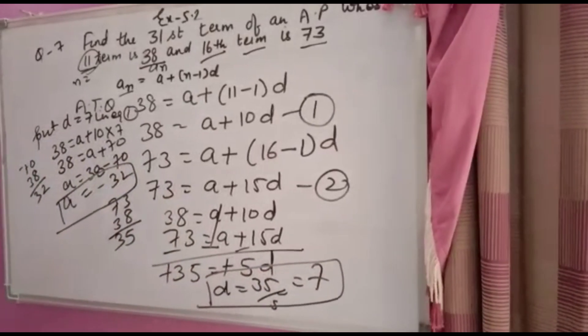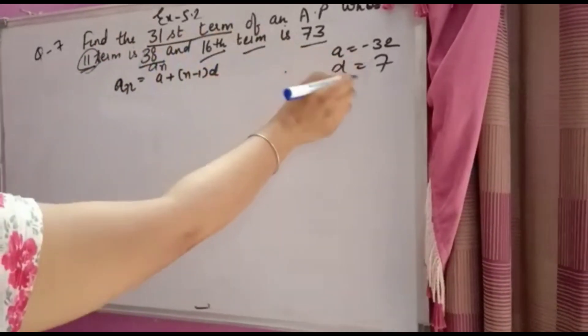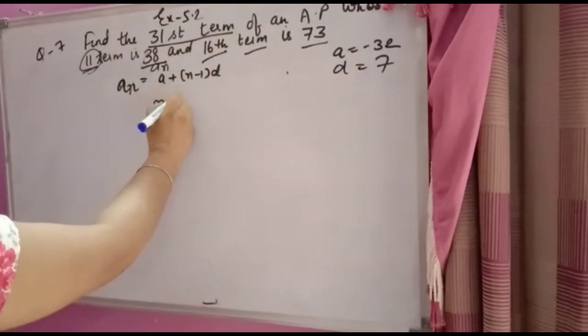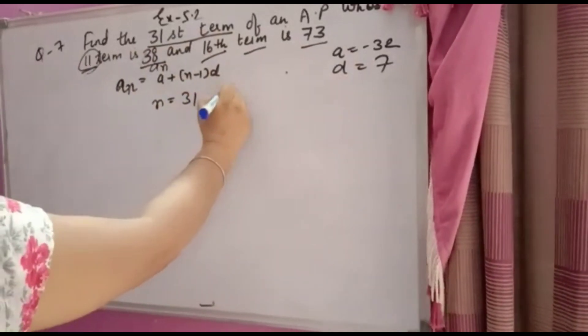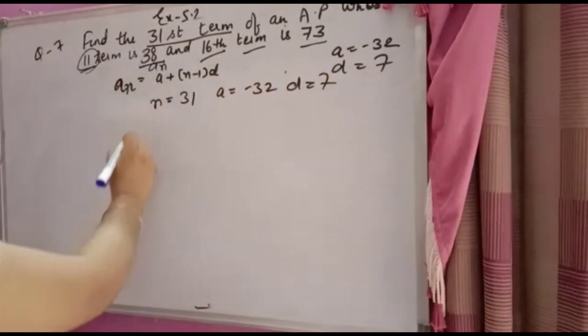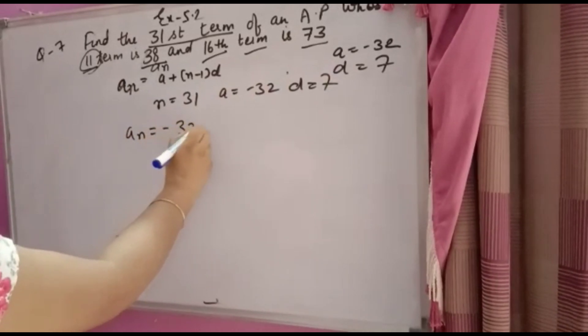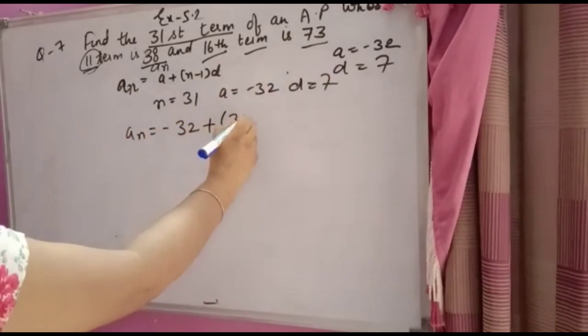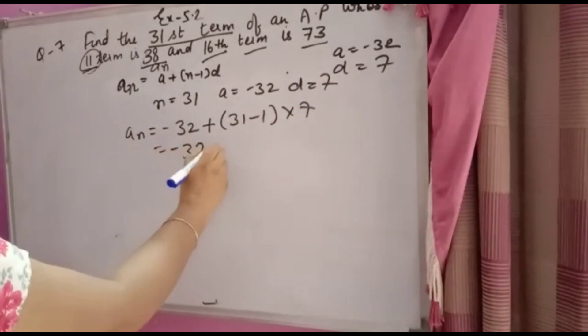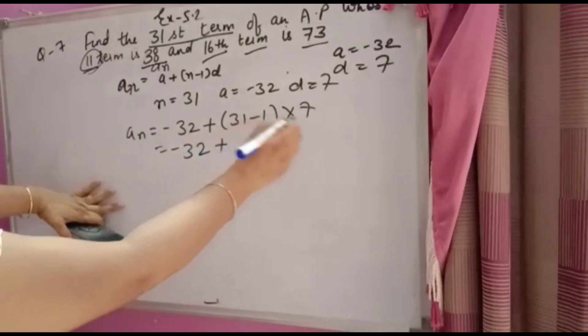Now you have to find the 31st term. A = -32 and D = 7. For the 31st term, N = 31. Using the formula, AN = -32 + (31-1)×7 = -32 + 30×7.